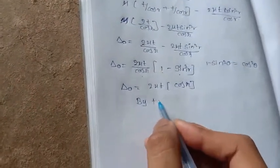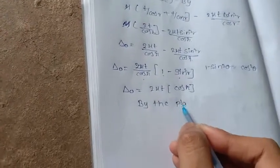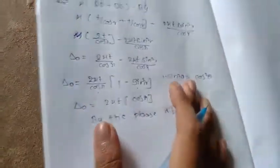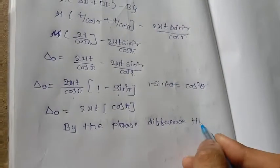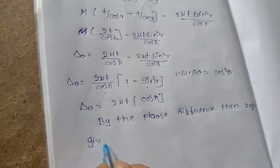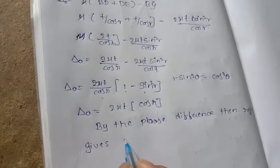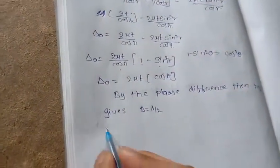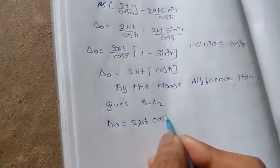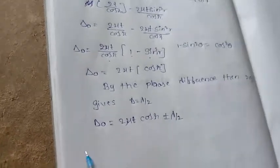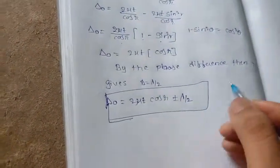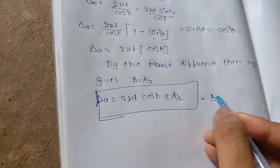The path difference delta equal to lambda by 2. This is the resultant value, this is the equation.